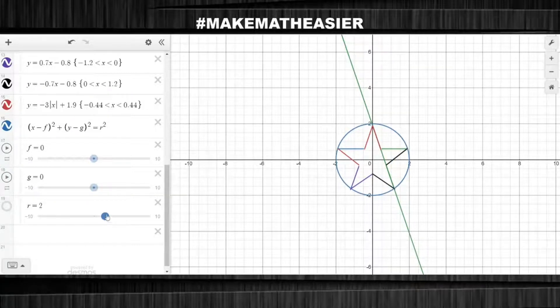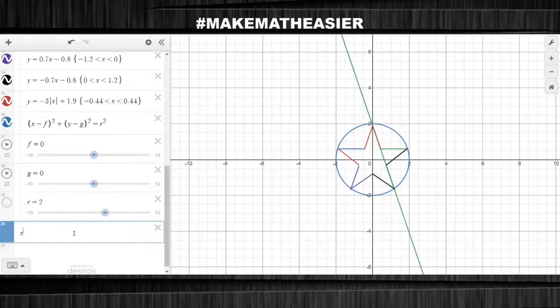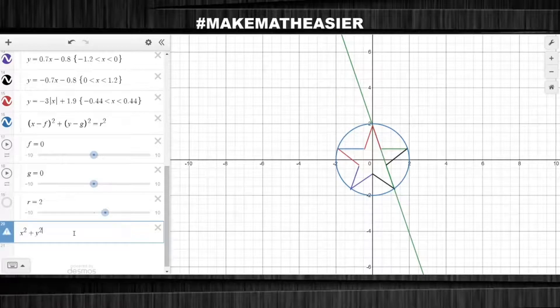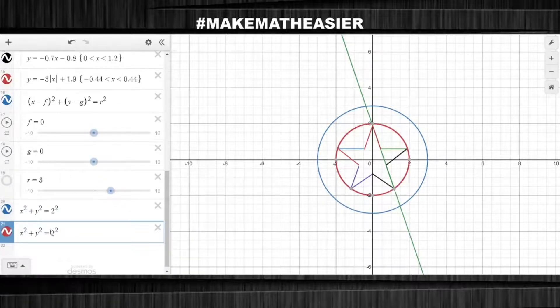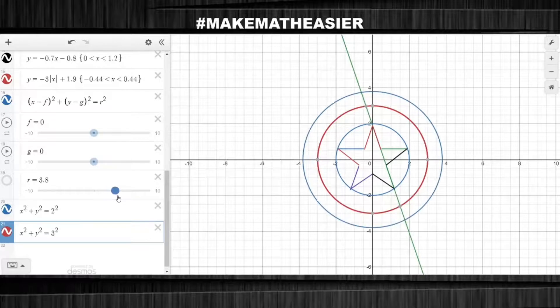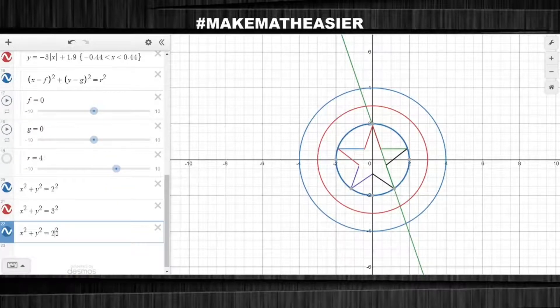The first circle, I set its R size to be two. Because all the circles are in the same spot, I'll just be copying, pasting, and changing the R sizes. The second circle will be an R size of three.